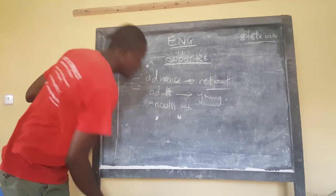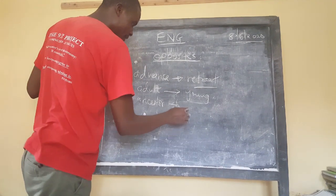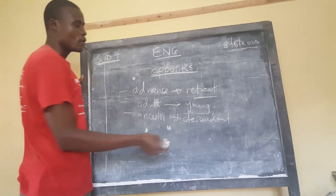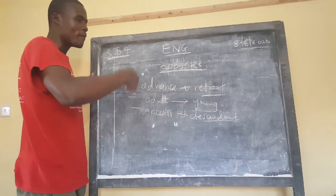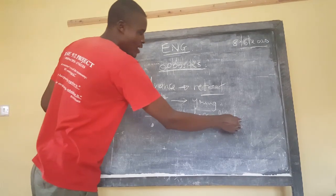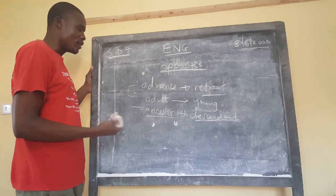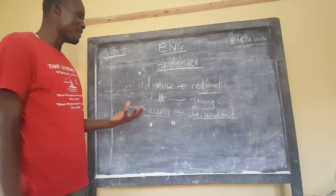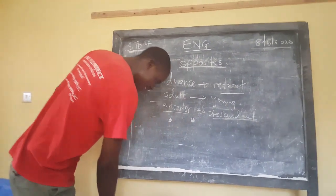The word 'ancestor' — the opposite of that is 'descendant'. In the Bible we talk of Abraham, who was promised by God that he was going to have many descendants — meaning those are people who are born after the ancestors. Our ancestors were the likes of Abraham. We who are the children are now called the descendants. So the opposite of ancestor is descendant.